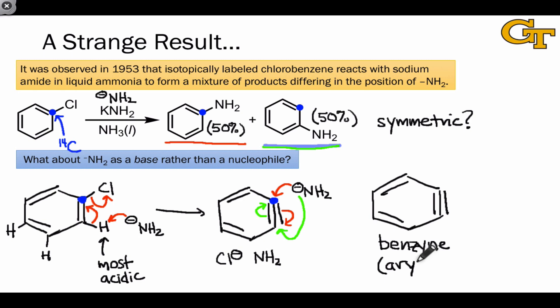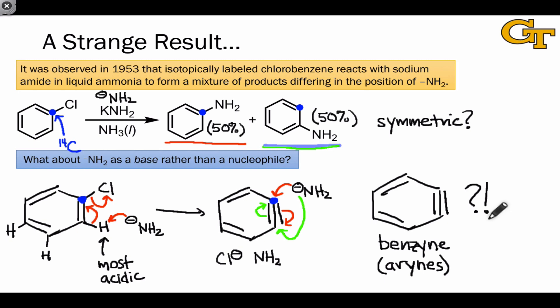Benzyne is one example of a broader class known as arynes, which include heteroaromatic versions of this. This looks bizarre, and the existence of benzynes was highly controversial in their early years, but nowadays it's been well established that benzynes are viable intermediates that can be used for a variety of transformations — nucleophilic aromatic substitutions like this, and others involving thinking about this new bond as a pair of pi electrons.